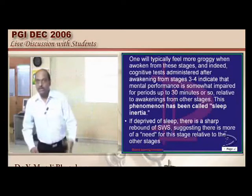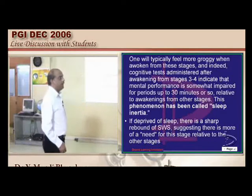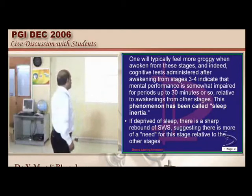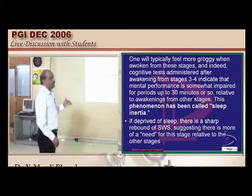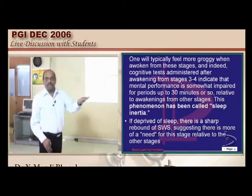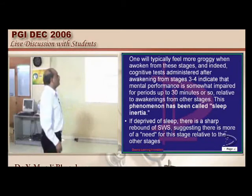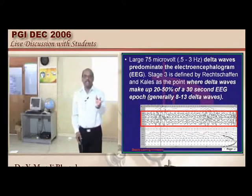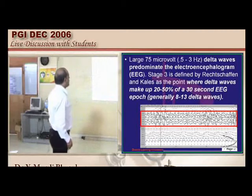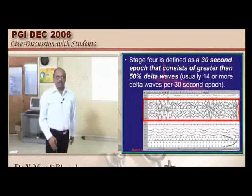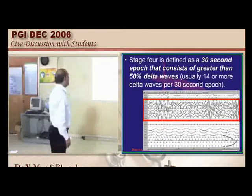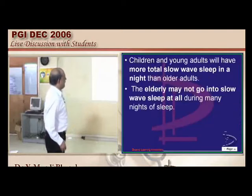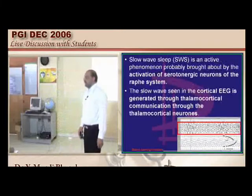Do elderly people versus infants differ in the composition of slow wave sleep? Definitely — elderly people may not go into the deeper horizon of deep sleep at all, whereas in children this NREM phase 3 and 4 constitutes longer sessions. The important neurotransmitter for stage 3 and 4 of NREM is serotonin, produced by serotonergic neurons. Thalamocortical neurons are the place where serotonin is responsible for this stage 3 and 4 delta wave activity.